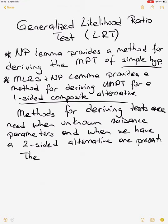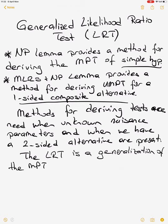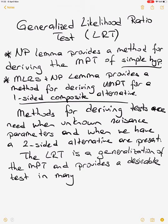The likelihood ratio test or generalized likelihood ratio test is a generalization of the most powerful test, and it provides a desirable test in many applications. Its usage is more common in practice compared to the others. In most powerful test settings, we usually don't have simple hypotheses in real applications — it is the first derivation of the powerful test concept.